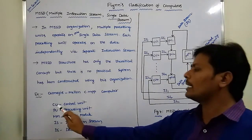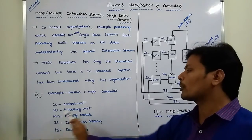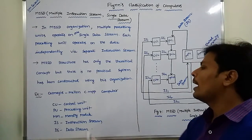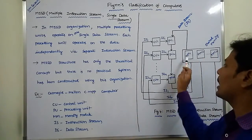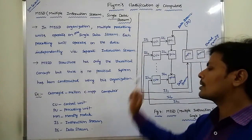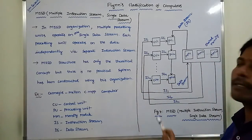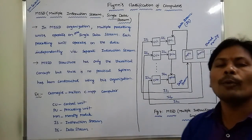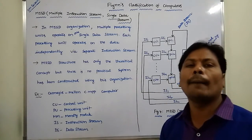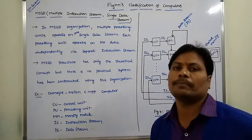The abbreviations used are: CU for control unit, PU for processing unit, MM for memory module, IS for instruction stream, and DS for data stream. Next, we go to the MIMD computer.